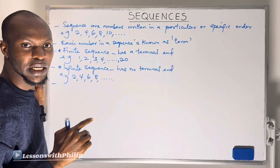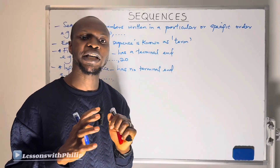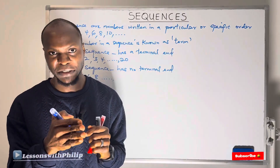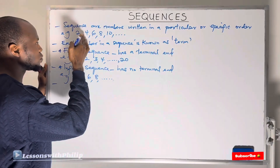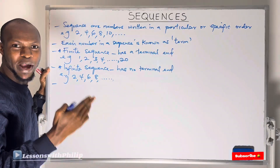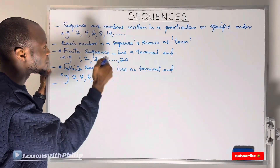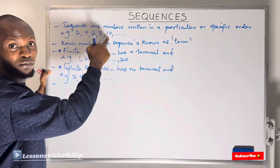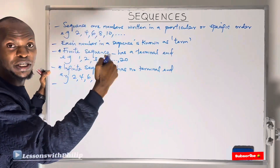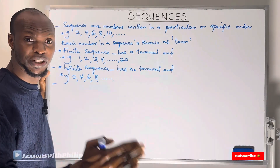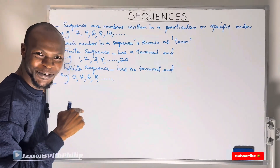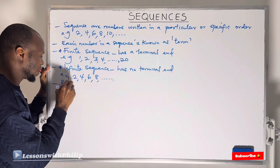Every sequence has a particular rule that governs it. For example, from 2 we go to 4, from 4 to 6 — that shows we are adding 2 to each term. You can predict the next number: after 10 it should be 12, because each term differs by an addition of 2. That shows the rule that governs this sequence is an addition rule.